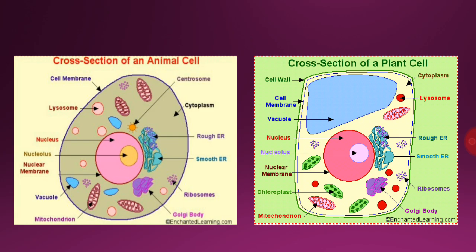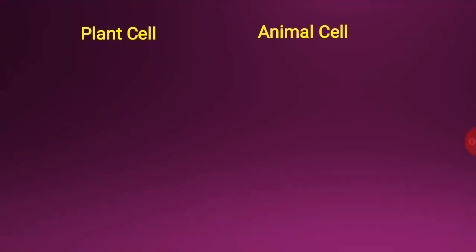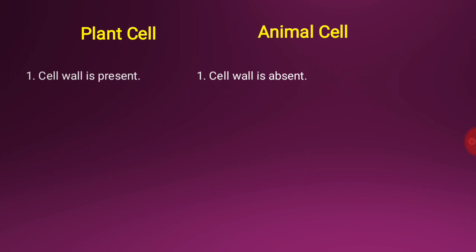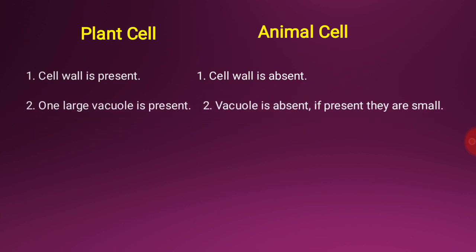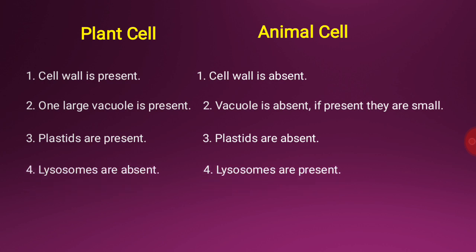Let us now study the difference between plant cells and animal cells. Cell wall is present in plant cells and absent in animal cells. One large vacuole is present in plant cells; if vacuoles are present in animal cells, they are very small. Plastids are present in plant cells and absent in animal cells. Lysosomes and centrosome are present only in animal cells.